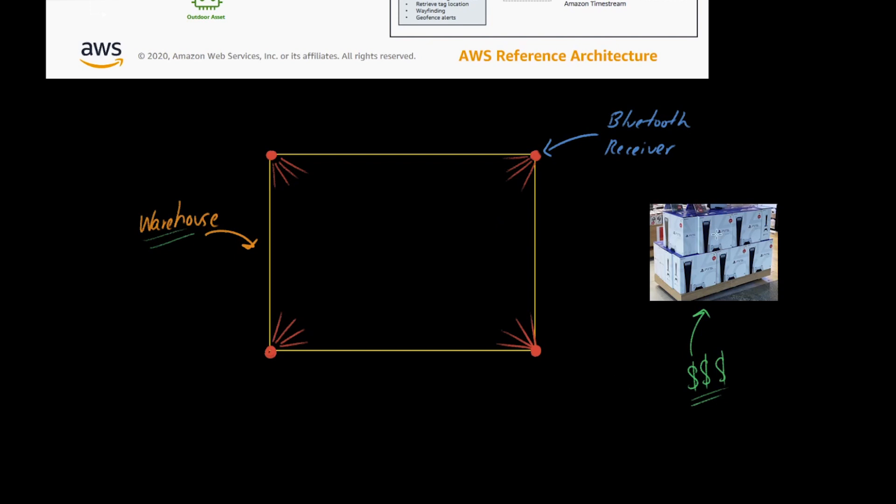The first step is to add a Bluetooth emitter tag to the skid. And then they've configured this warehouse to have some fixed number of Bluetooth receivers. Using these Bluetooth receivers, they are using the signal strength of each of the tags.